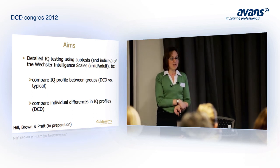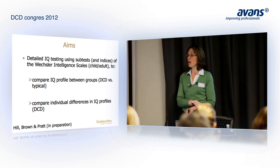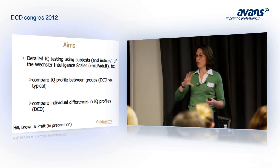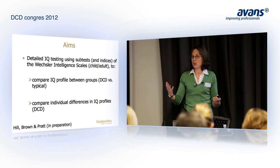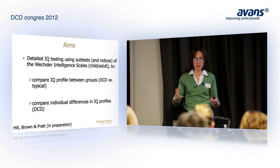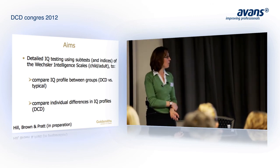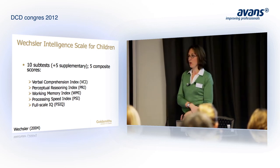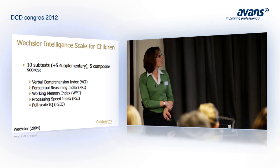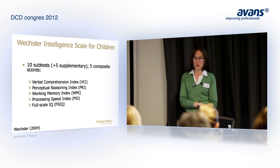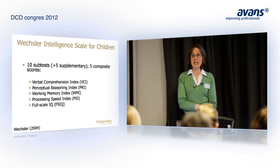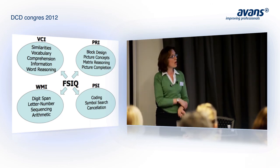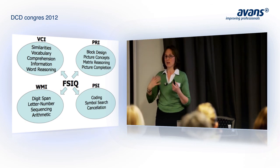In this set of data, we were using detailed IQ testing using full versions of the Wechsler Intelligence Scales for Children and for Adults, and we were able to use those data to compare the IQ profile between groups — DCD versus typically developing — as well as looking at individual differences in IQ profiles, whether all participants would show the same peaks and troughs across the WISC subtests or a mixture. This is work I've been conducting with my PhD students Duncan Brown and Michelle Pratt. We used the Wechsler Intelligence Scale for Children, which has 10 subtests and five composite scores.